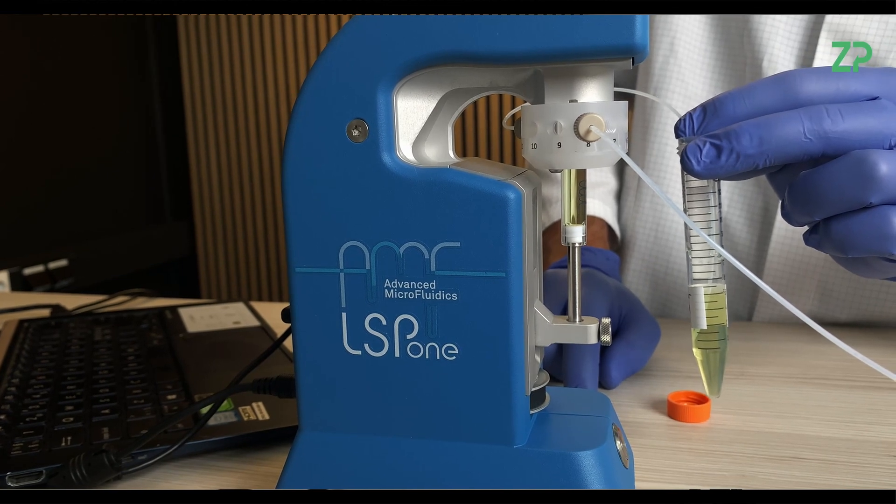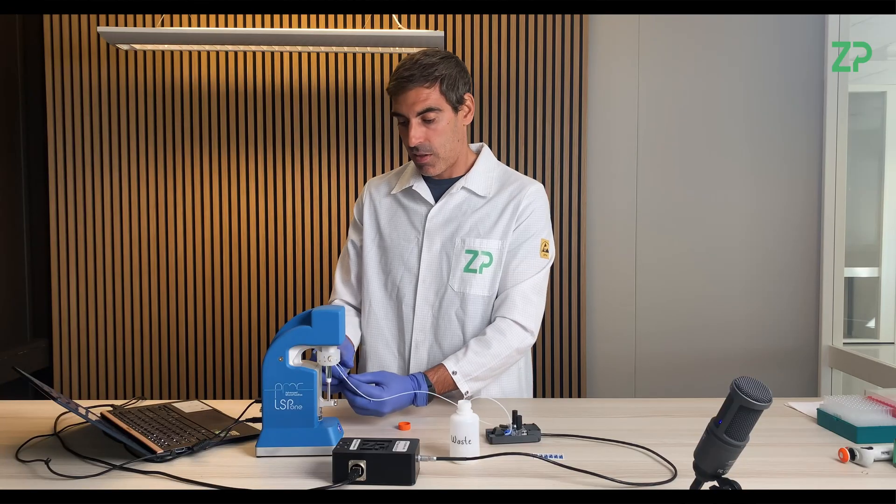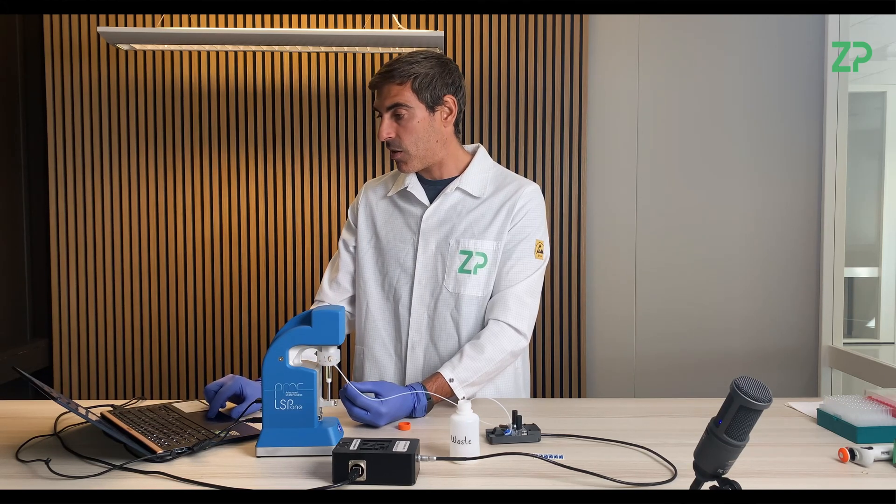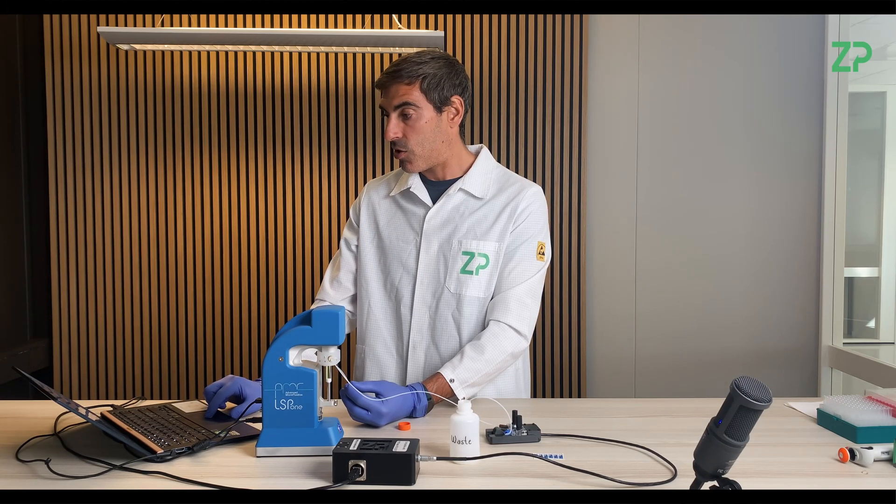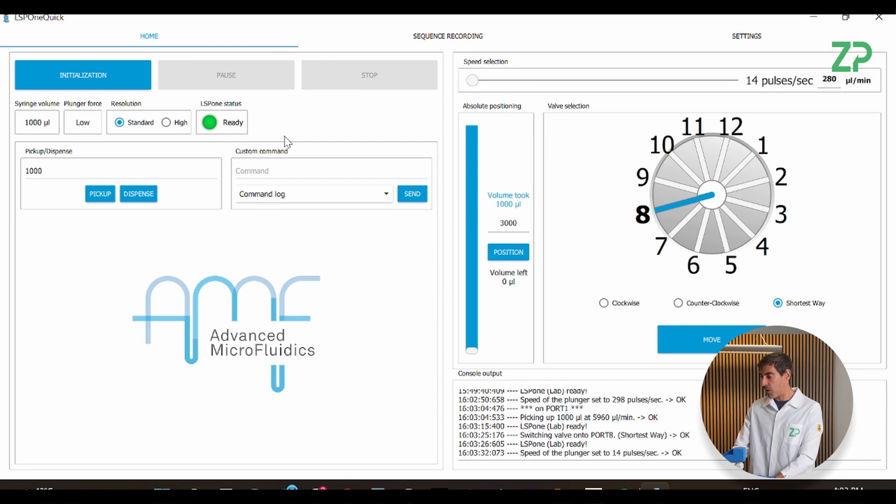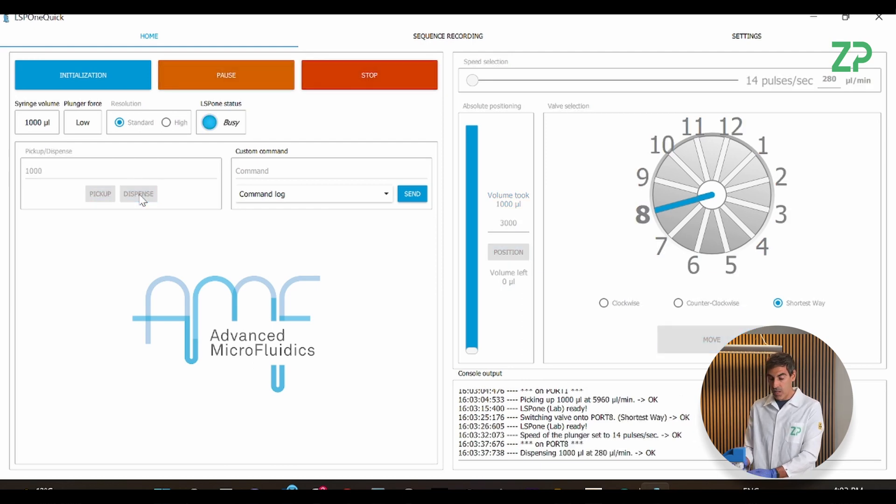Once this is done, now I'm going back to the software and I'm going to change from channel 1 to channel 8. Now press move. I'm going to reduce now the pulses to about 14 pulses per second and I will start dispensing.